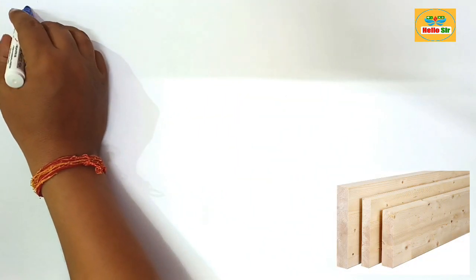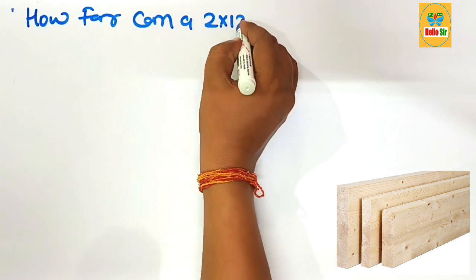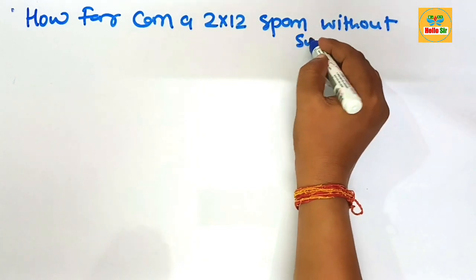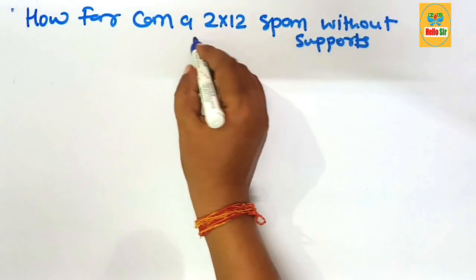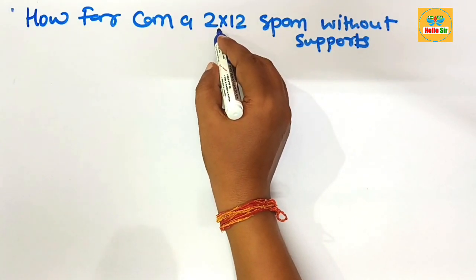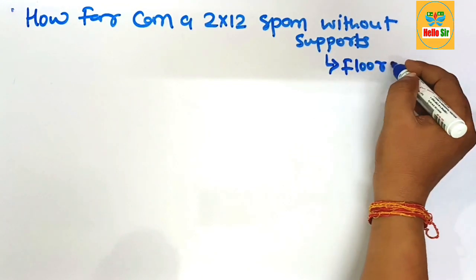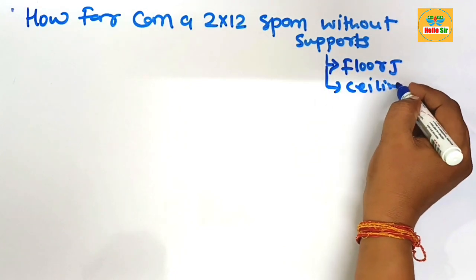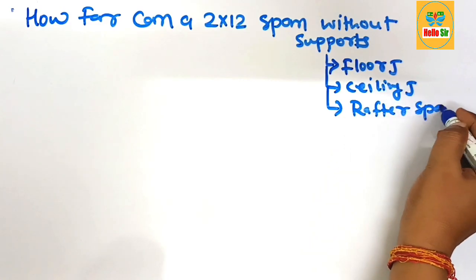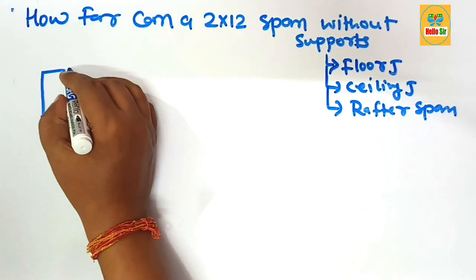Hi guys, today in this video you will learn how far a 2x12 dimensional lumber can span without support. This is your question — you have to find out the maximum span length for a 2x12 dimensional lumber as floor joist, ceiling joist, and rafter. Here, first we make a rough diagram.